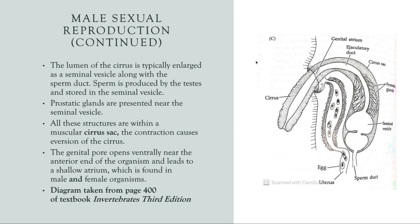Sperm is produced by the testes and is stored in the seminal vesicle, which you see over here to the right. There are prostatic glands that are present near the seminal vesicle. All these structures are within a muscular cirrus sac, which is this dark outlining of the organism right here. This contraction causes the eversion of the cirrus. The genital pore opens near the anterior end of the organism and leads to a shallow atrium, which is found in male and female organisms.